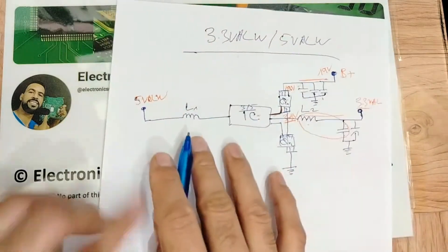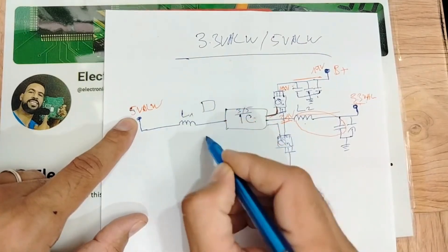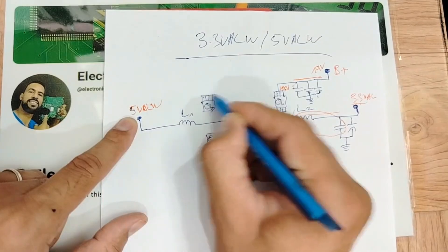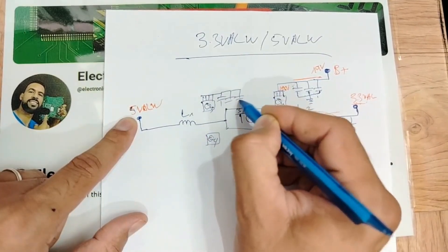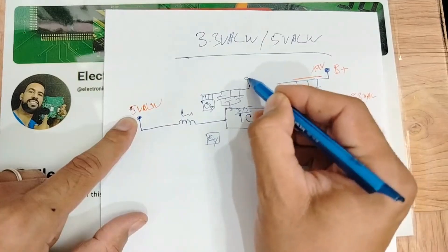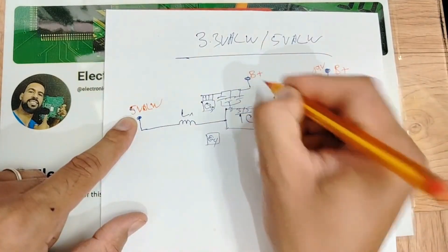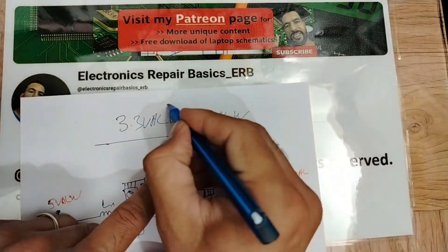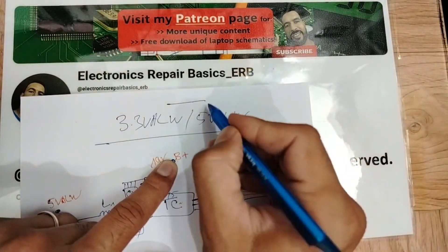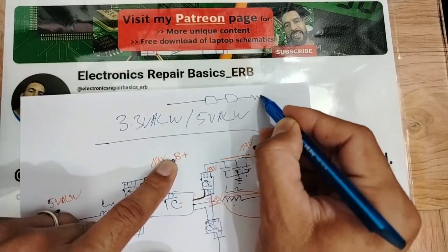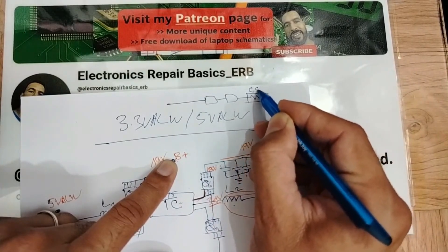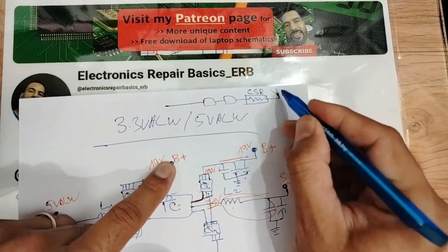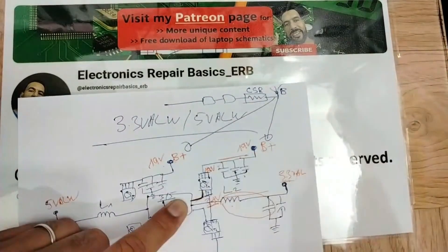The same for the 5-volt circuit: we have the IC, two MOSFETs — Q1, Q2, Q3, and Q4. The drain is also connected to three ceramic capacitors connected to the ground, and here we have B+, the same 19-volt input. This B+ comes from the two input switches and the current sense resistor (CSR), and from there B+ is distributed to all circuits.